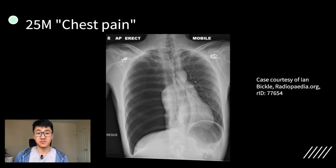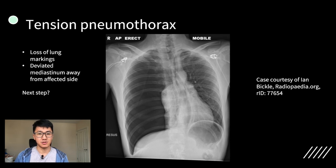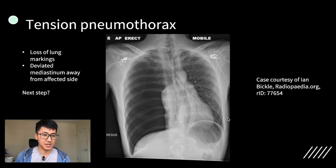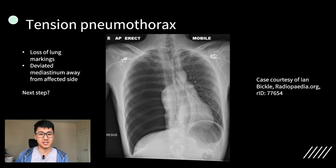On to the next case. Pause the video now and have a look and see what you think. So this is an example of a right-sided tension pneumothorax. That's because you've lost the lung markings in the entire right hemithorax. And what would make it a tension pneumothorax is that the mediastinum is deviated away from the affected side. When you're seeing this as a doctor, you have to think about the next step because tension pneumothorax is a medical emergency and you need to think about urgent treatment.